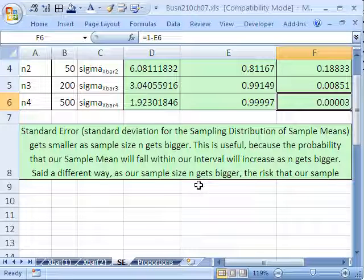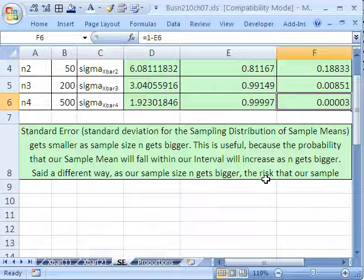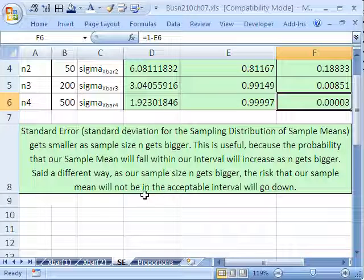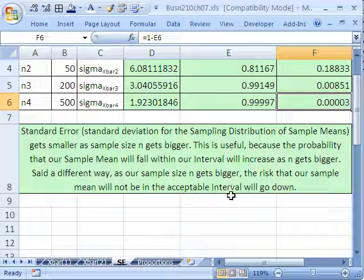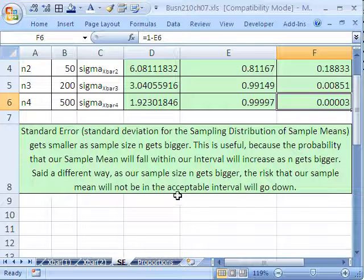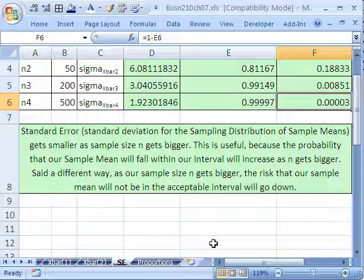Said in a different way, as our sample size gets bigger, the risk that our sample mean will not be in the acceptable interval will go down. Particularly, that last little bit will help us in chapter 9.